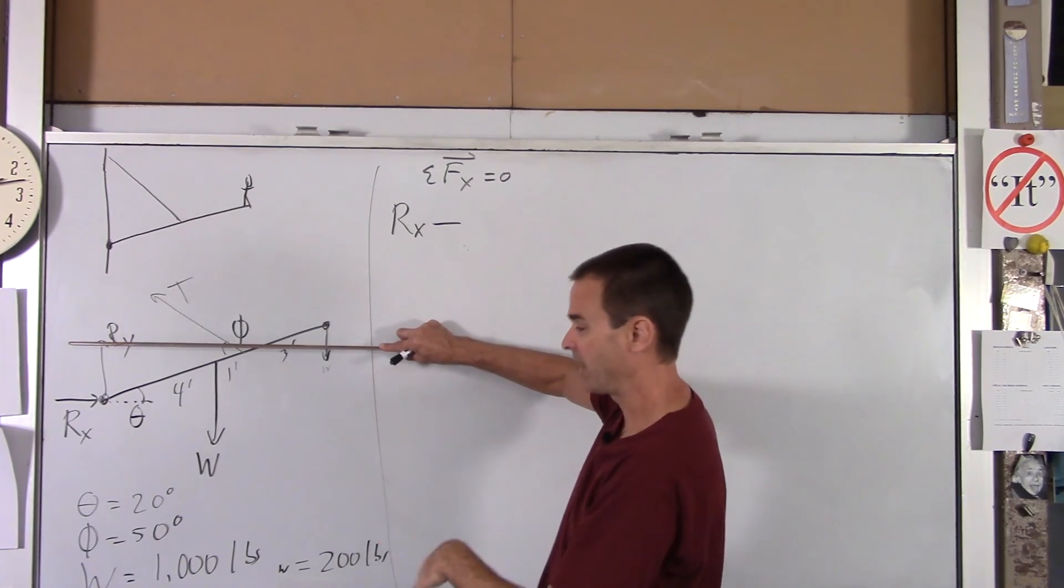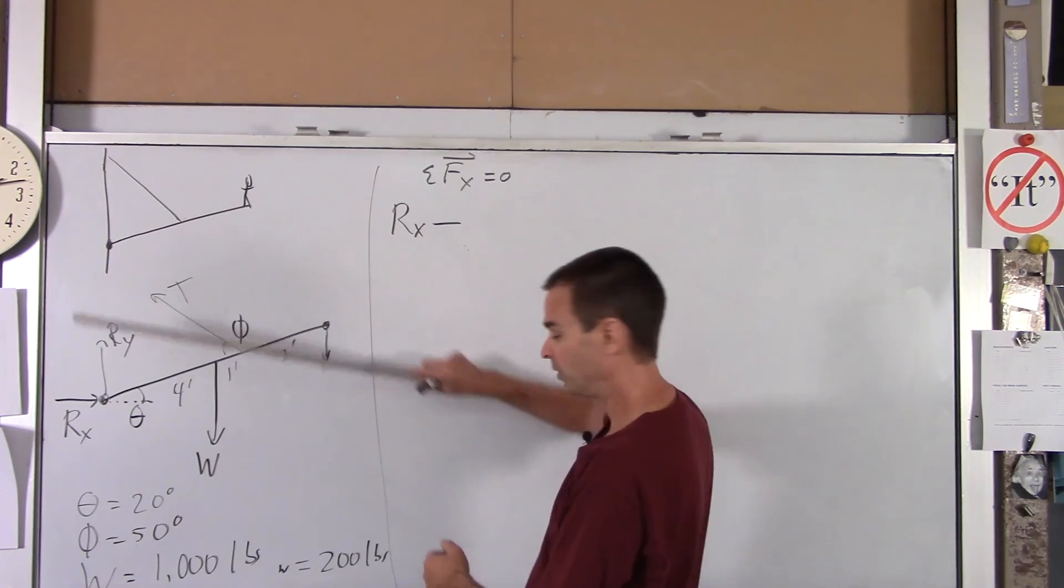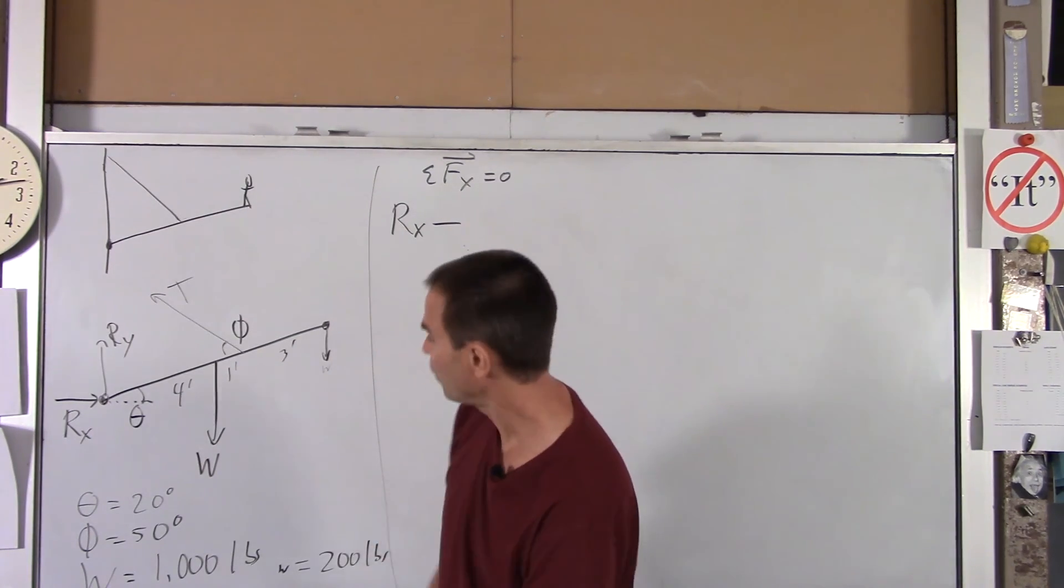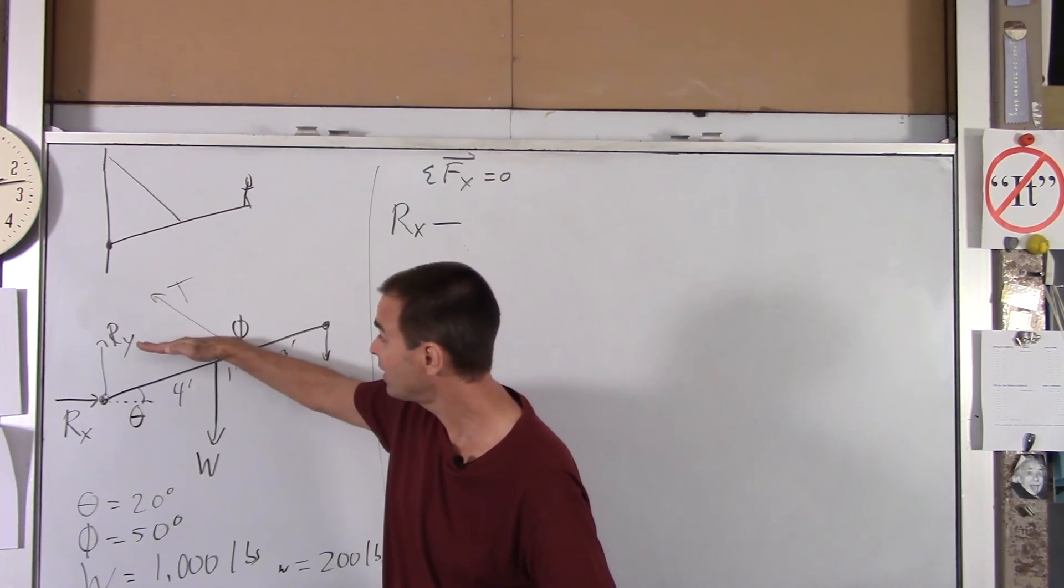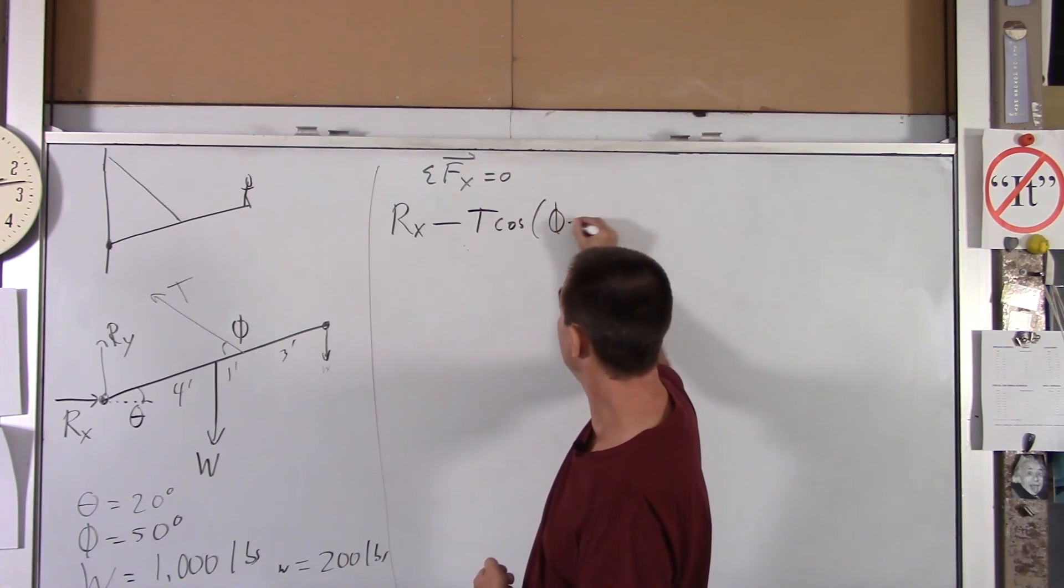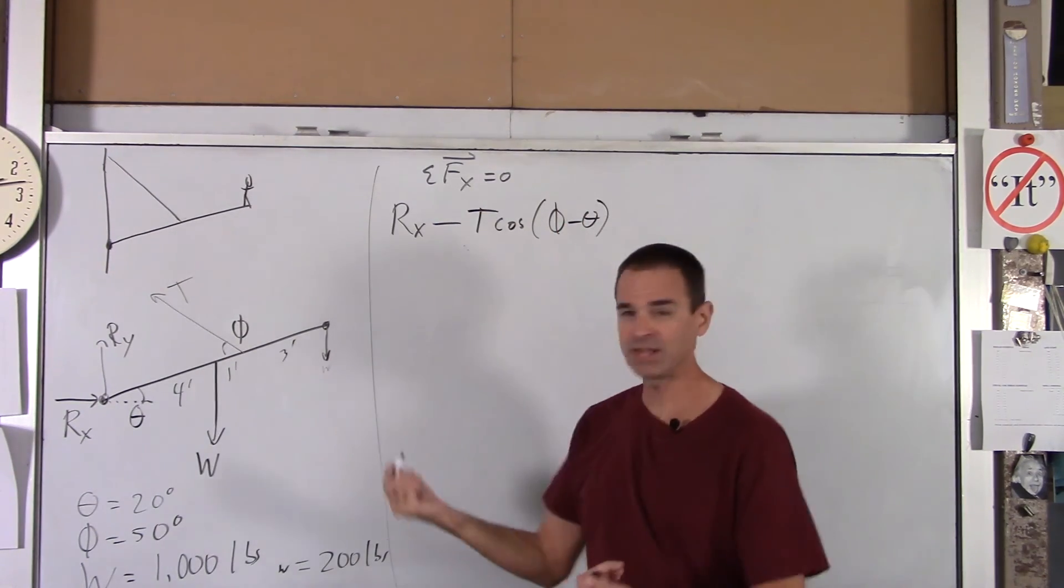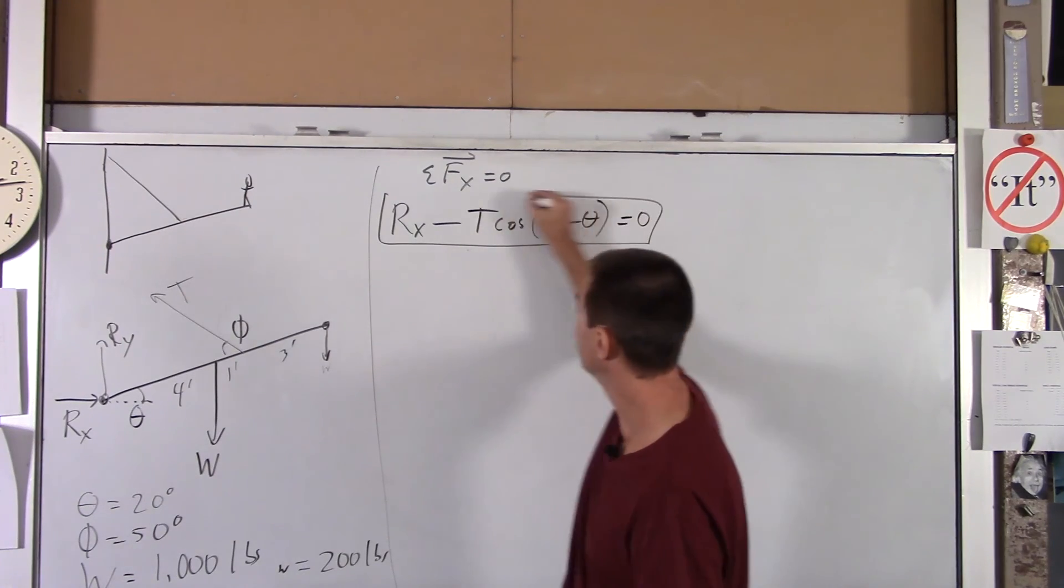Now I'm not going to plug numbers in yet, but it would be 50 minus 20, which is going to be 30 degrees. So we need the component of tension that is strictly horizontal, which is T cosine of phi minus theta. And that's it in the horizontal direction. So you've got one equation with two unknowns.